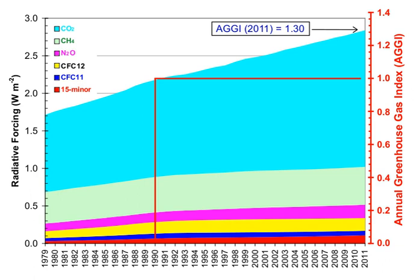Water vapor accounts for the largest percentage of the greenhouse effect, between 36% and 66% for clear sky conditions and between 66% and 85% when including clouds. Water vapor concentrations fluctuate regionally, but human activity does not directly affect water vapor concentrations except at local scales, such as near irrigated fields. Indirectly, human activity that increases global temperatures will increase water vapor concentrations, a process known as water vapor feedback. The atmospheric concentration of vapor is highly variable and depends largely on temperature, from less than 0.01% in extremely cold regions up to 3% by mass in saturated air at about 32 degrees Celsius.